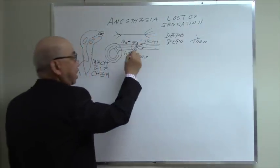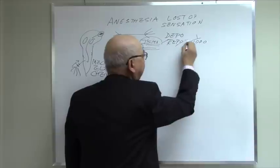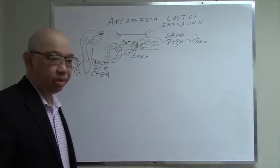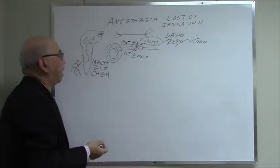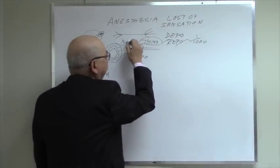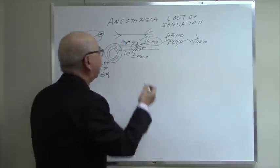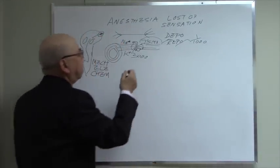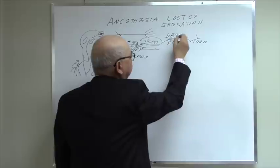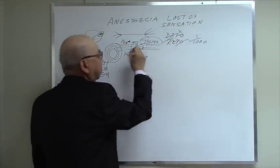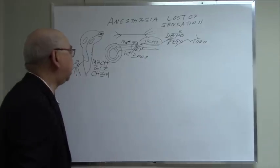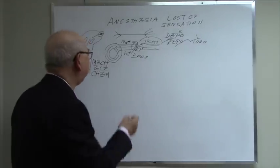It happens very fast, within one-thousandth of a second. When one part depolarizes, it will depolarize the adjacent part, and that is how nerve conducts. To block the nerve impulse, we block the sodium channel — we block the influx of sodium into the nerve cell. So we block the influx of sodium; there's no depolarization, and if there's no depolarization, there is no impulse conduction. What do we use to do that? We use local anesthetic.